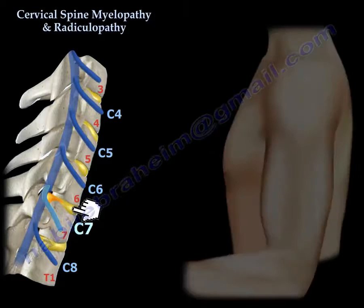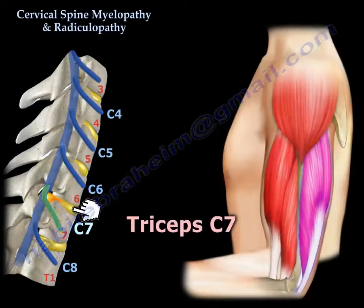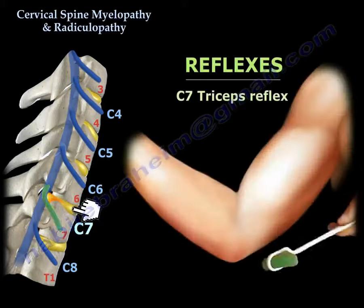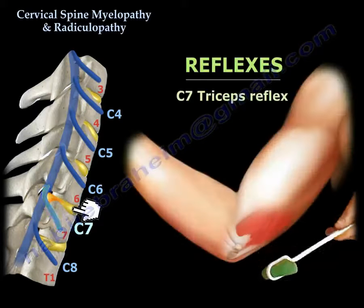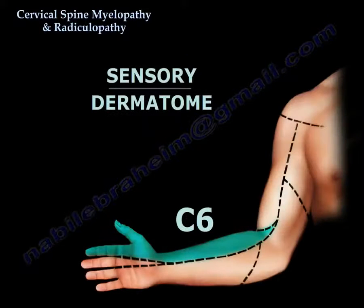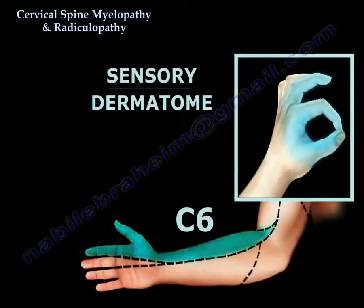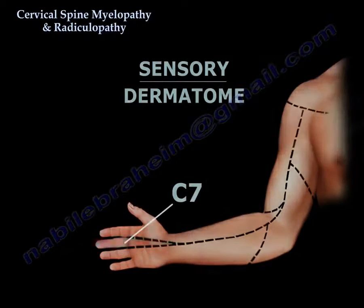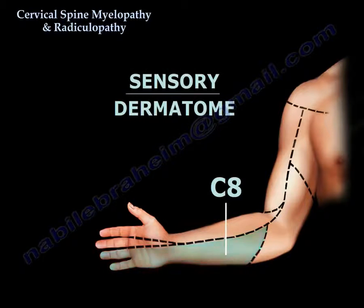The triceps reflex is C7. For dermatomes: C6 is at the index finger (the shape of the number 6), C7 is the middle finger, and the fifth finger is C8.